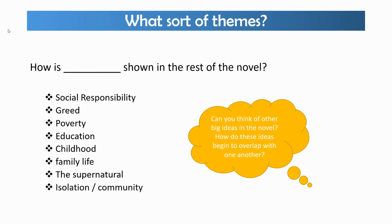As you start to think about these ideas, you'll notice that they overlap with one another. For example, social responsibility could be said to be the flip side of greed. Or poverty and education begin to link together because Dickens saw that education was a way out of poverty. As you prepare these different themes, you might realise that you're using the same quotes again and again, and that will help you identify which quotes are going to be useful to learn.